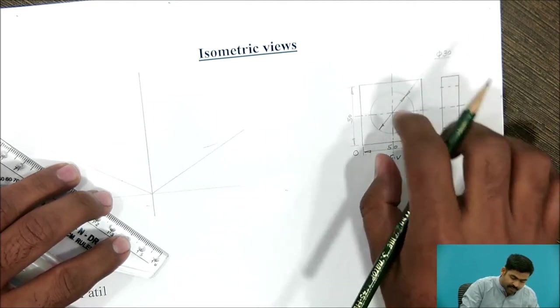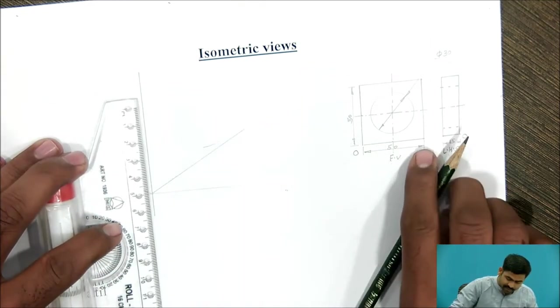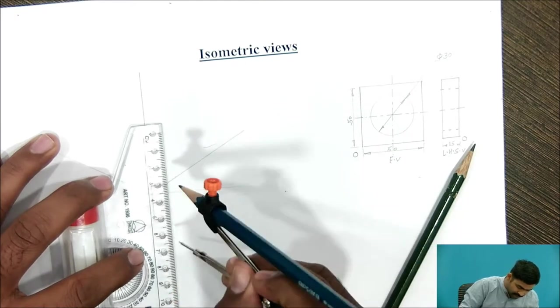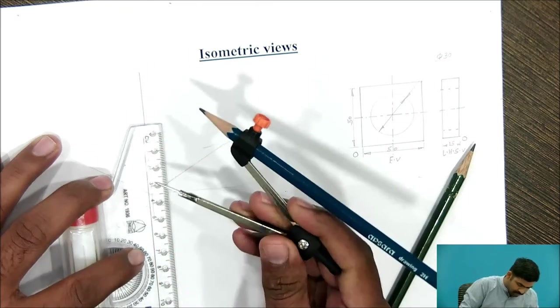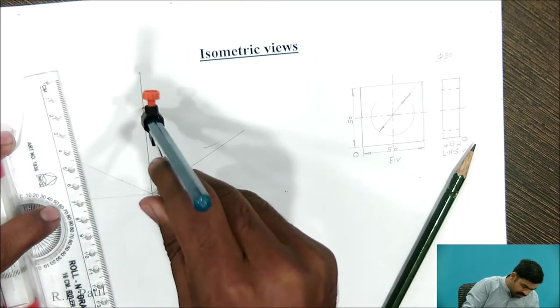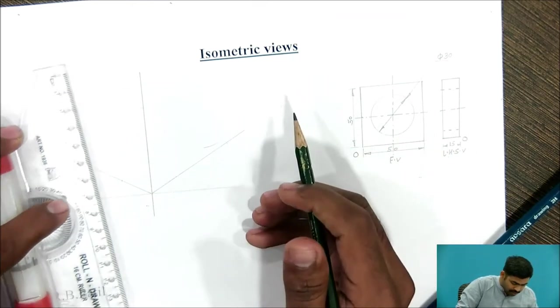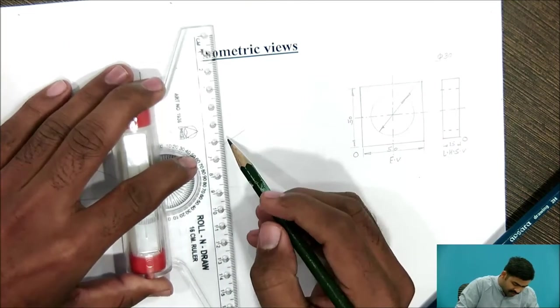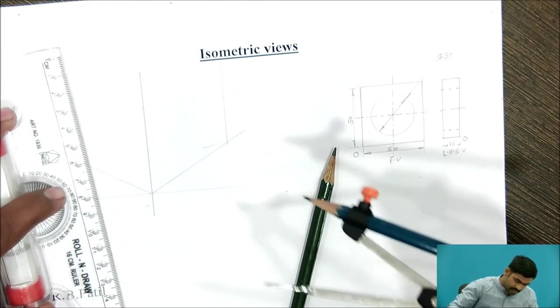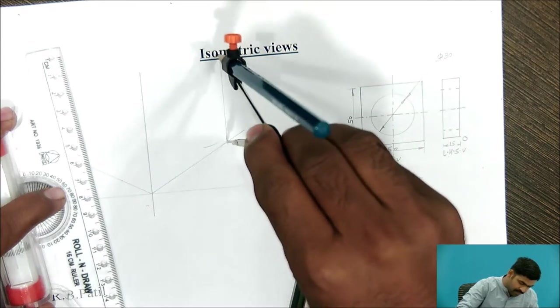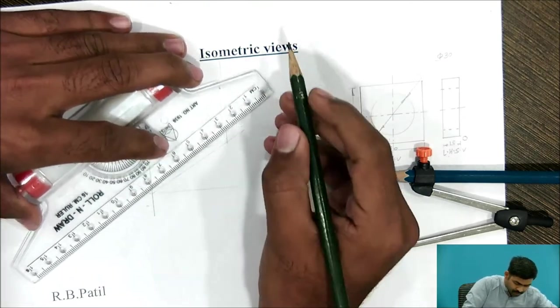The dimension is 50 mm by 50 mm. So, first draw the box with dimension 50 mm. Take 50 mm in compass, from this origin, mark 50 mm. Now, draw the isoline parallel to this axis, again mark 50 mm on this, join this mark.